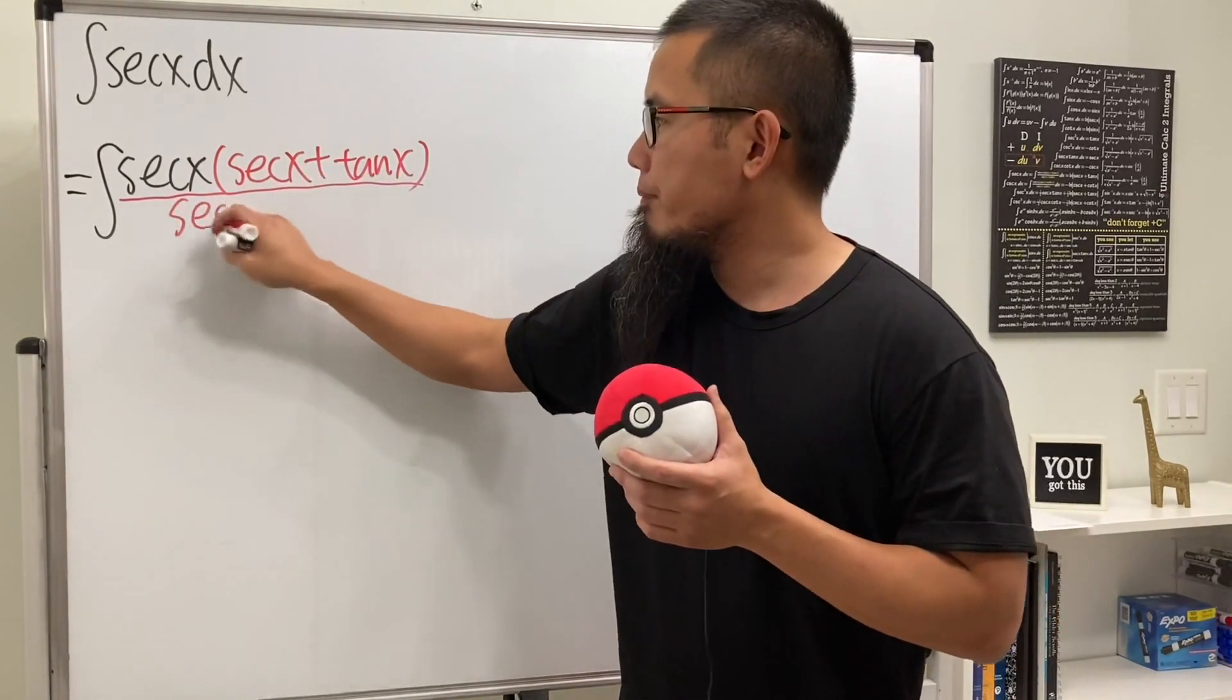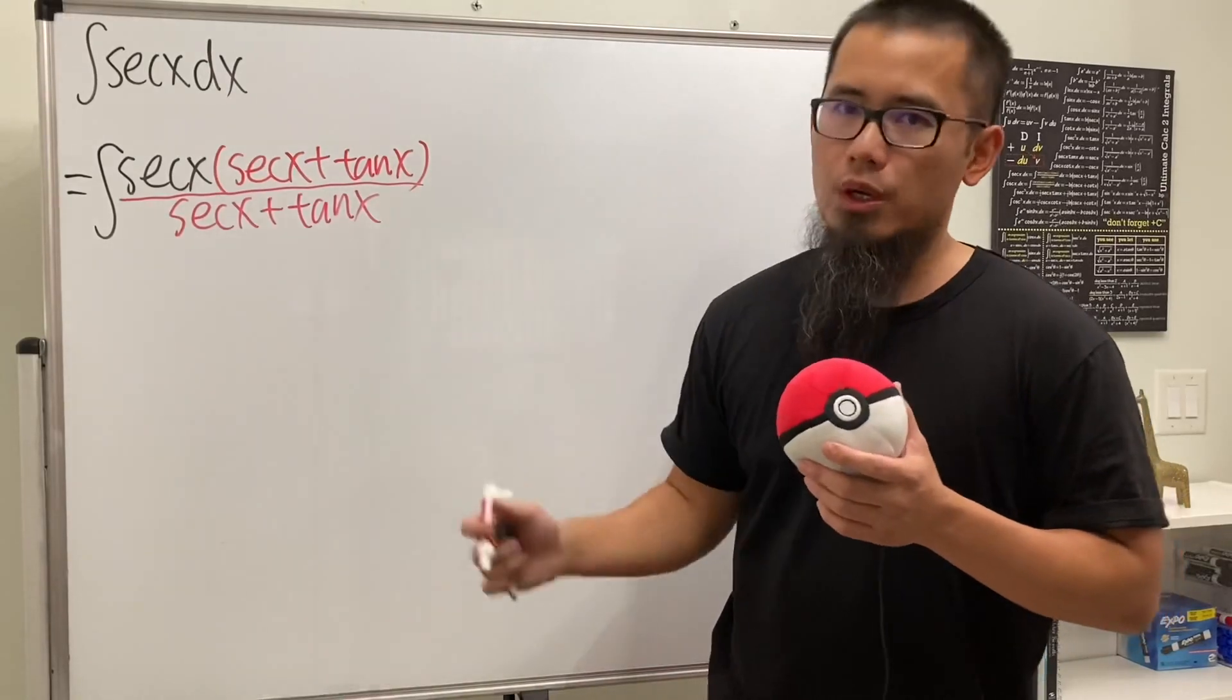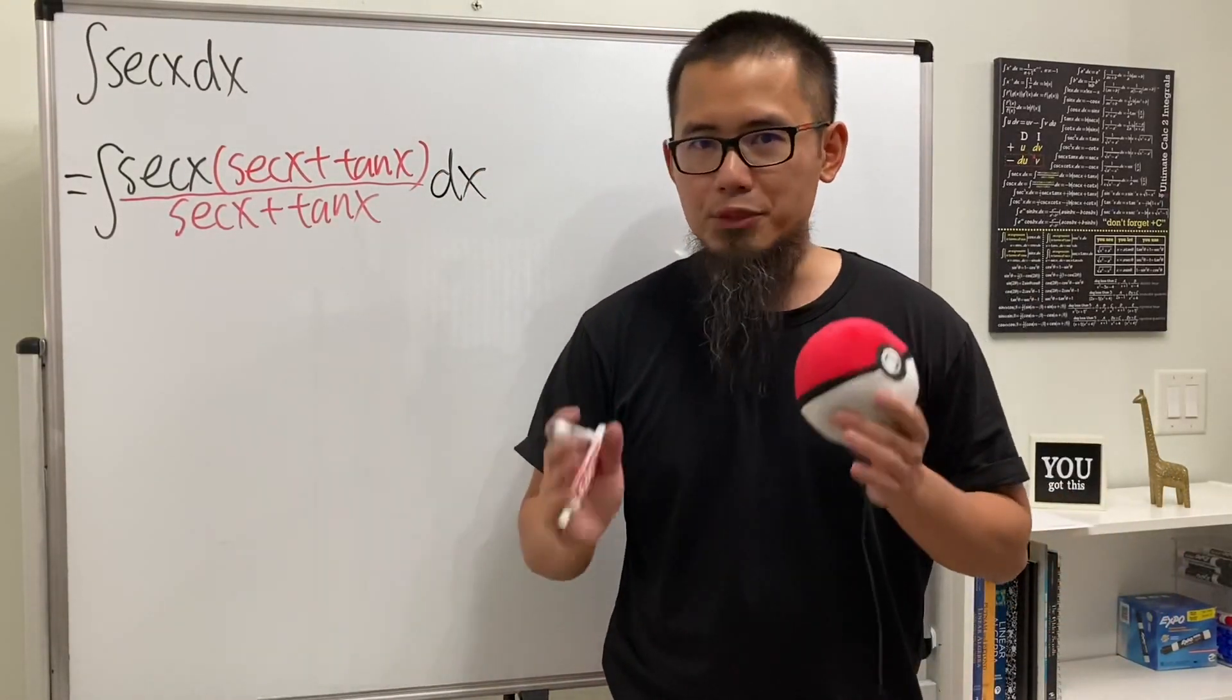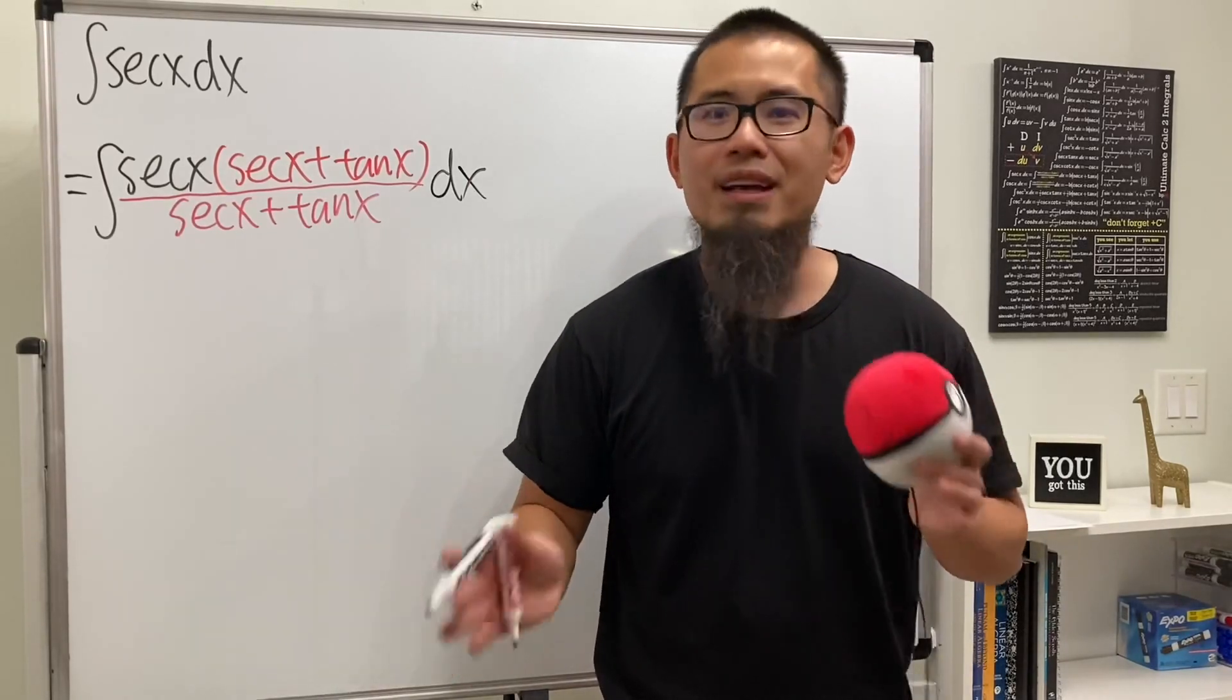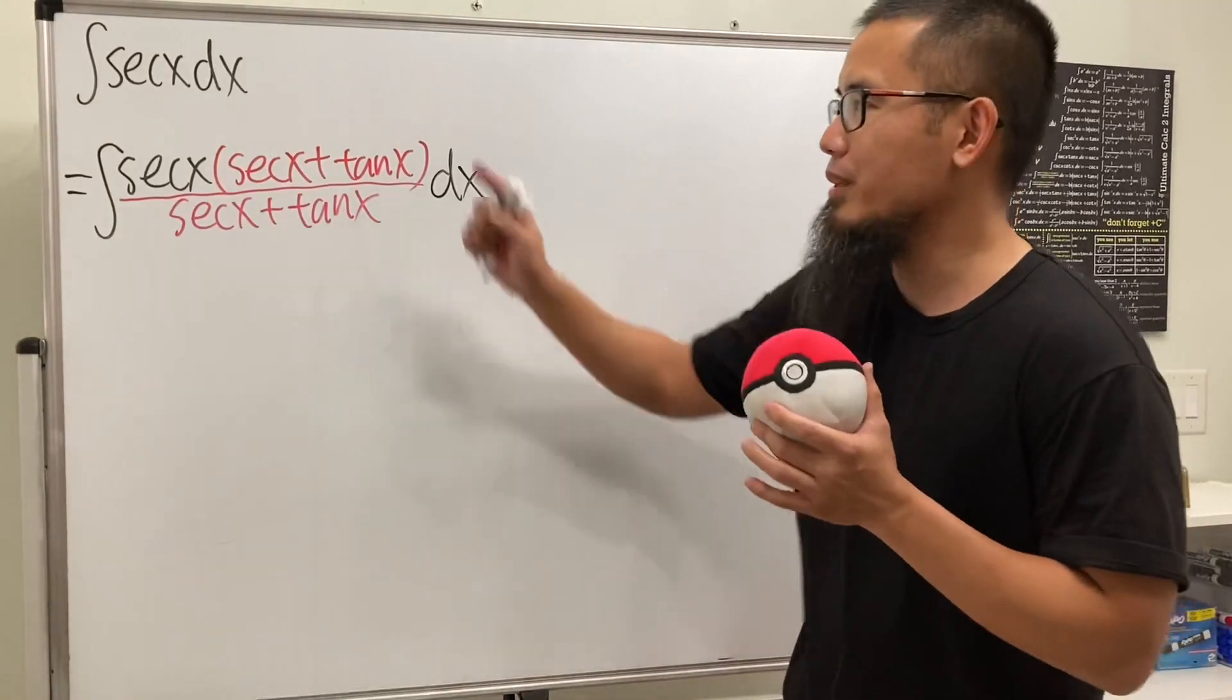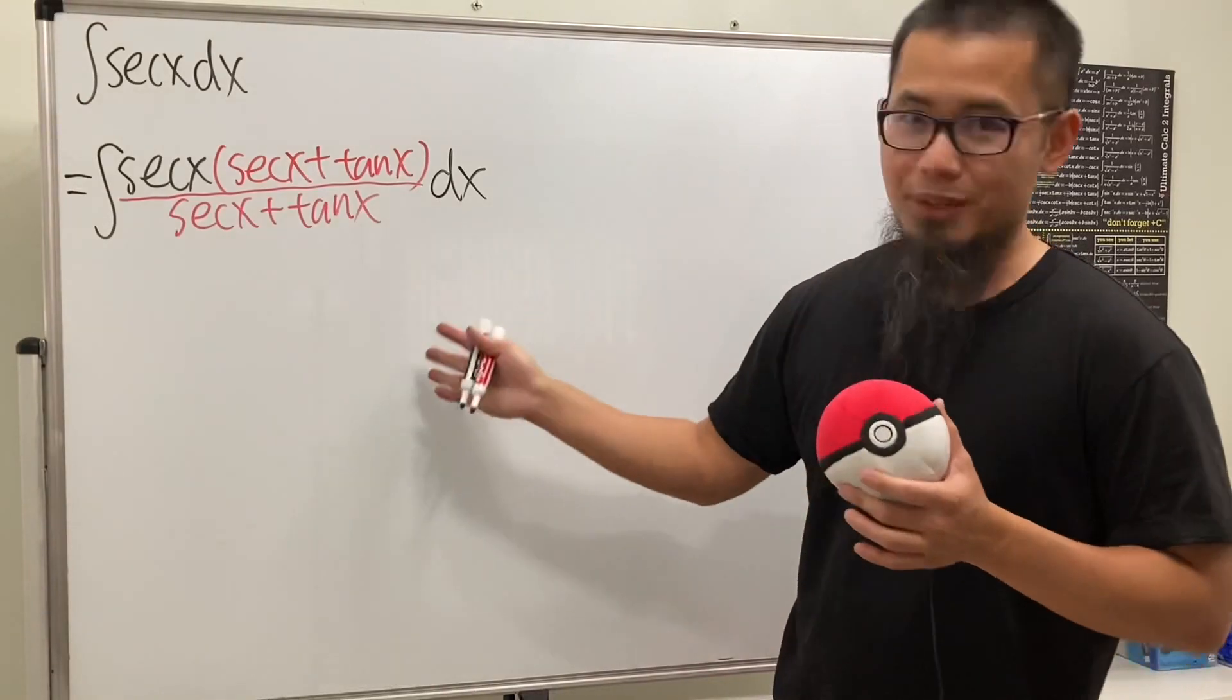And now, I know a lot of you guys are wondering, how in the world do we know to do this? Well, this right here is just the standard way, this is the famous first step. If you don't really like this way, you guys can check out my other video where I show you how to integrate secant x without doing this. But we'll just do this right here.